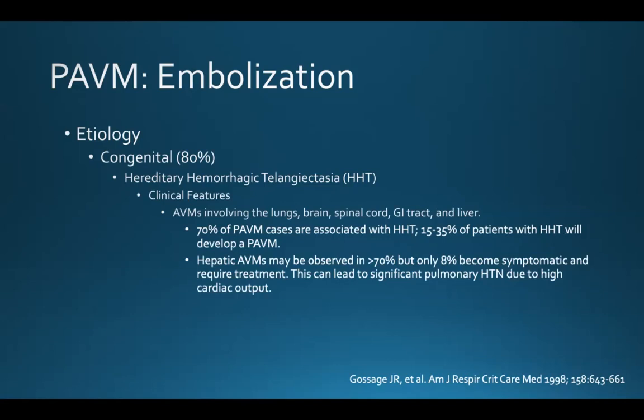AVMs can involve the lungs, brain, spinal cord, GI tract, and liver. Seventy percent of pulmonary AVM cases are associated with HHT, and 15 to 35 percent of patients with HHT will develop a pulmonary AVM. Hepatic AVMs may be observed in more than 70 percent of patients, but only eight percent become symptomatic enough to require treatment. These can lead to significant pulmonary hypertension due to high cardiac output.